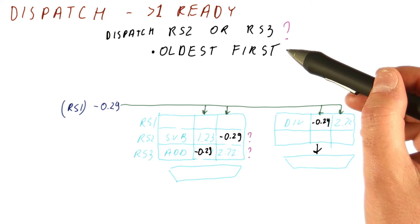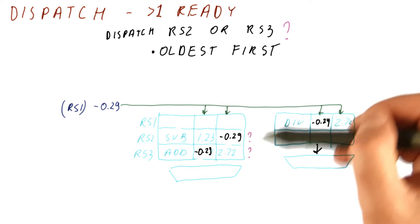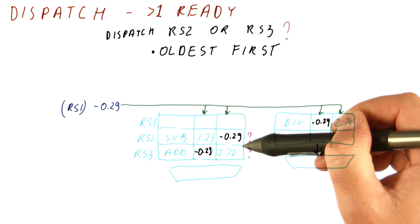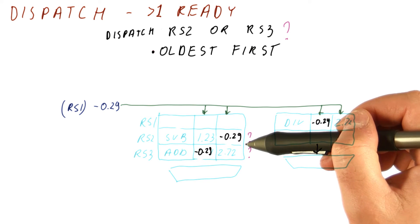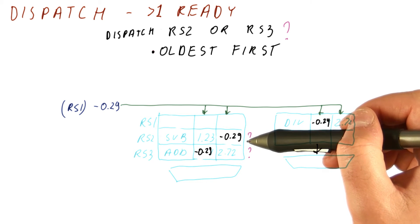One choice that usually makes a lot of sense is oldest first. So whichever of these instructions has been sitting here longer will be allowed to go first. Why? Well, because for an older instruction, all other things being equal, it's more likely that more instructions are by now waiting for it.